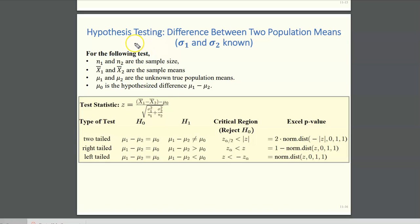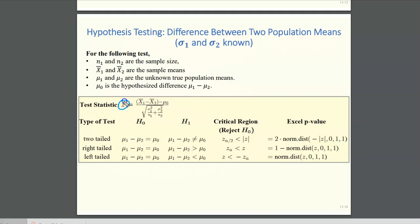In this lesson we're going to consider hypothesis testing for the difference between two population means when the population standard deviations or variances are known to us. We have a summary of how to calculate the test statistic, the p-values, and the critical regions, and for this type of test we use the normal distribution — notice the z here. When we calculate the p-values via Excel we use the normal distribution function.